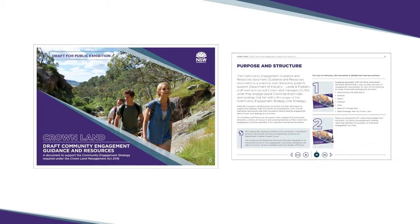For example, Crown land which is no longer required for public use can be sold. Under the strategy, all sales will be notified before they proceed and the community will be able to make a submission on the impact of the proposed sale on their use and enjoyment of the land. We understand this is all new and can seem daunting, particularly for the people responsible for carrying out the engagement. To help understand and implement the community engagement strategy, we have also developed a comprehensive guidance and resources document. The documents are currently in draft and we are seeking feedback from our stakeholders and the community to help us refine them.